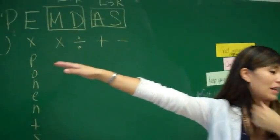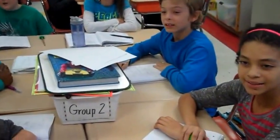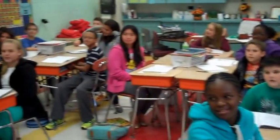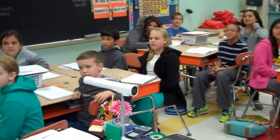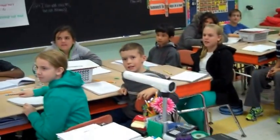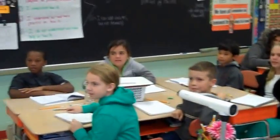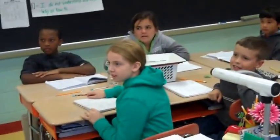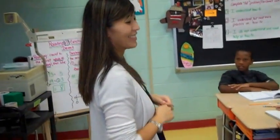So, boys and girls, like I was saying, order of operations — we use PEMDAS. We start with P stands for parentheses. Very good. After parentheses we move on to E for exponents. Very good. Next we look for multiplication or division — and that's from left to right. And then finally we look for addition or subtraction, and we always do that from left to right. Very nice job.